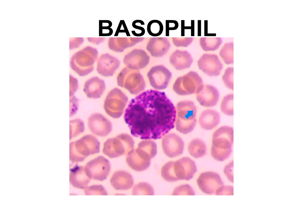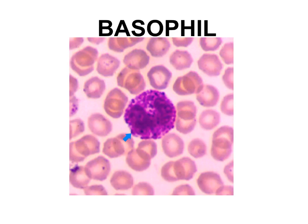Here we have a basophil. The large, deep blue-to-purple staining is so numerous that it masks the nucleus, giving the cell a grainy appearance. This is because basophils contain histamines and heparin, which cause vasodilation. They are rarely seen, making up less than 1% of white blood cells. An abnormally high level of basophils would suggest hemolytic anemia or something like chicken pox.